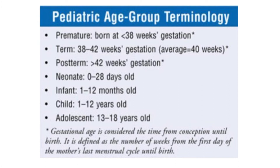Less than 38 weeks of gestation is premature. Between 38 and 42 weeks of gestation, the baby is called a term baby. A baby delivered after 42 weeks is called post-term.